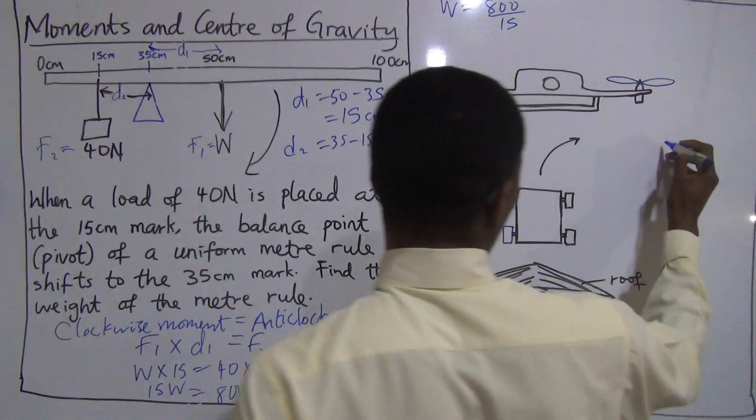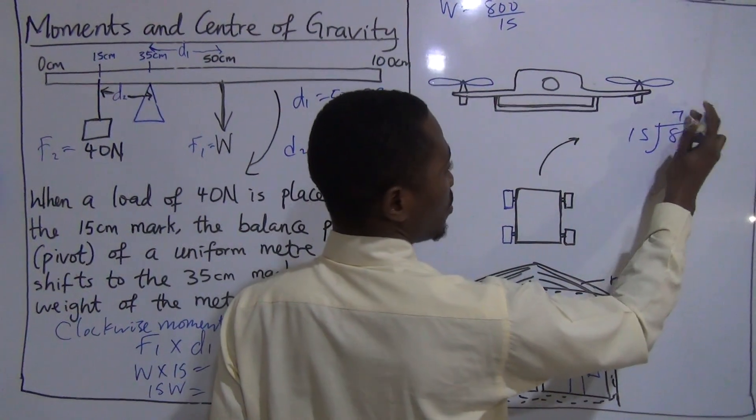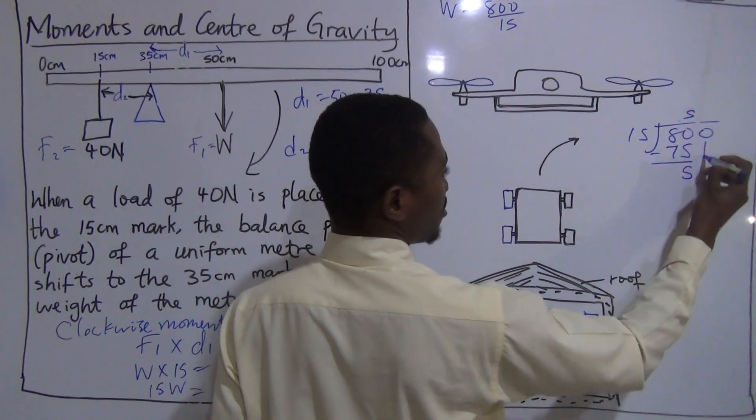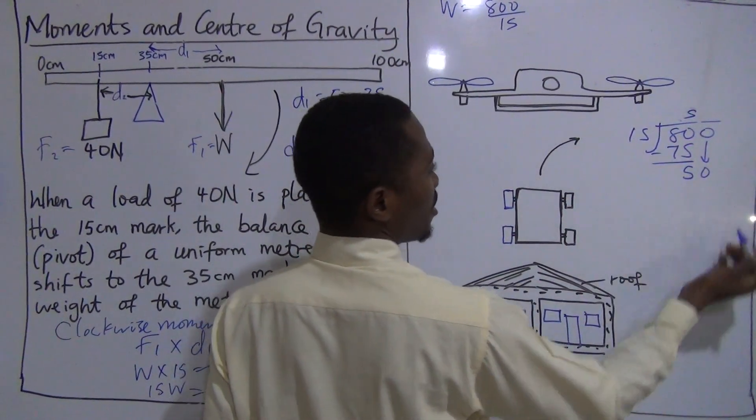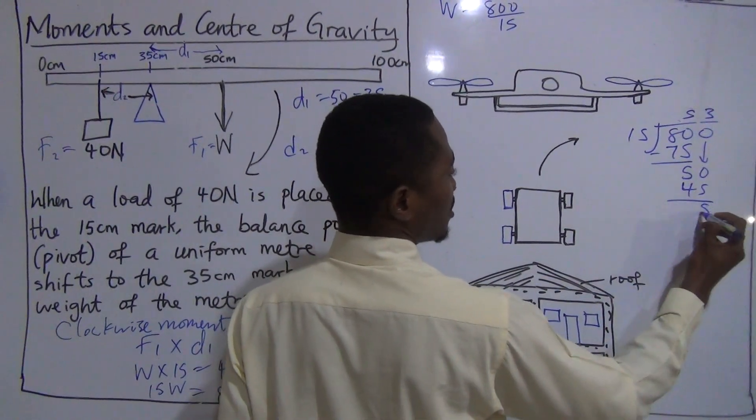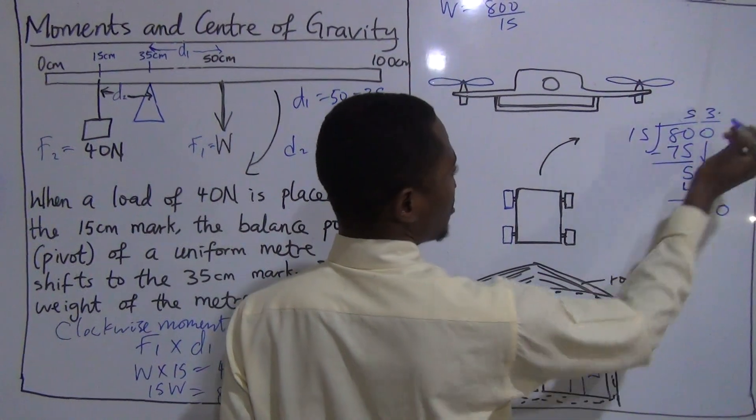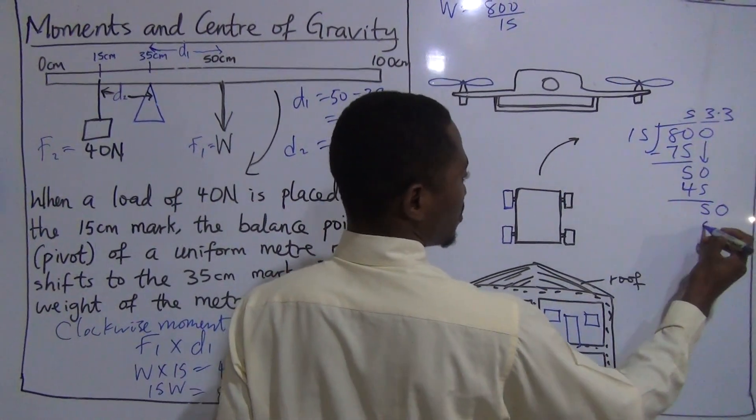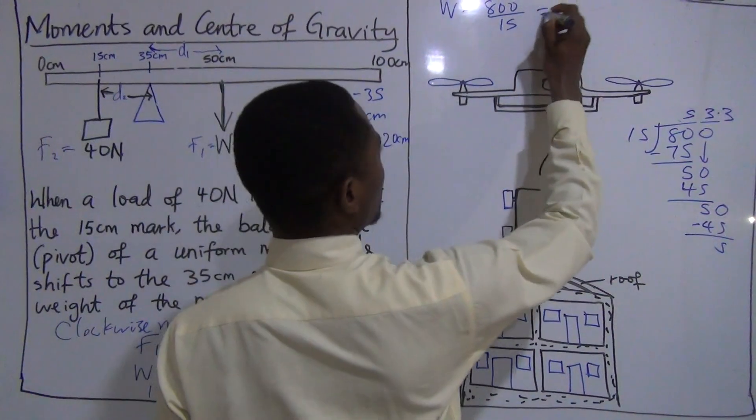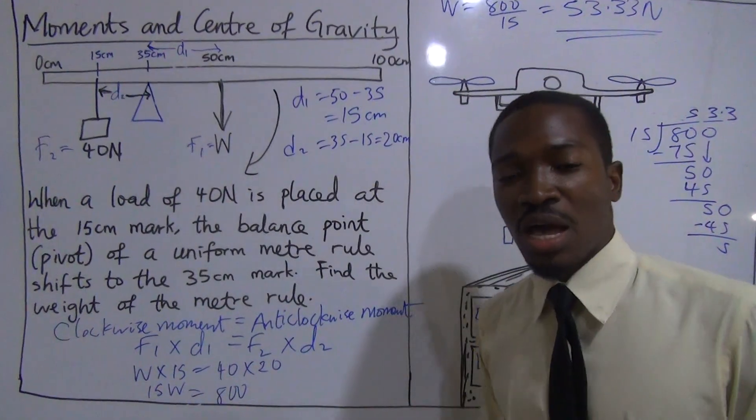Let's see. We can just draw a long division here. 800 divided by 15. Here we have 5. 5 times 15 gives us 75. Subtract, we're left with 5. Bring down 0. 50 divided by 15, we have 3. 3 times 15, you get 45. The remainder is 5. Decimal point, add 0. 50 divided by 15, you have 3. 3 times 15 is 45. So it's a recurrent decimal. That would be 53.33 newton.